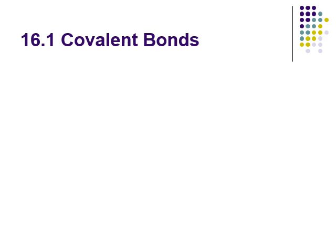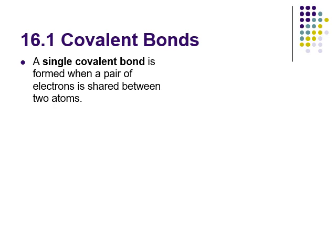Now continuing our look at different chemical bonds: chapter 15 was ionic bonds, chapter 16 covers covalent bonds. Besides all holding atoms together, these are very different ideas. A single covalent bond, the simplest type, is formed when a pair of electrons is shared between two atoms. I want to stress the word shared - it's not a transfer of electrons anymore, it is a sharing of electrons. Electrons are always shared in pairs, and the electrons that are shared are these valence electrons we've already talked about.